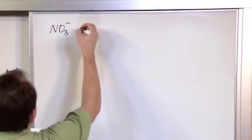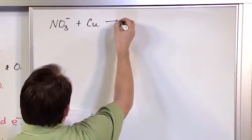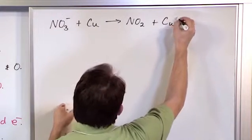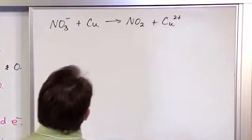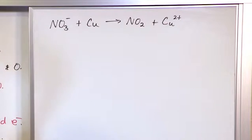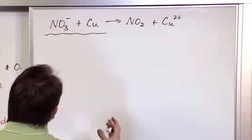NO3⁻ plus copper, which is no charge, no ion, yields NO2 plus Cu²⁺. So that's our equation. Let's just go through our process and see if we can get a bulletproof way of doing it. So step one.